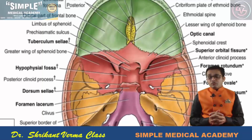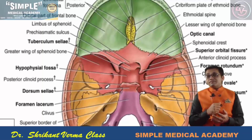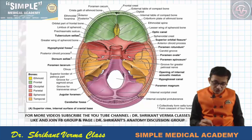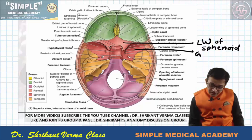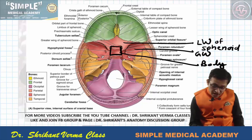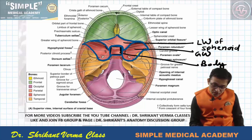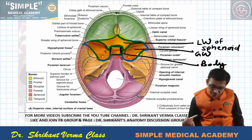These are the various parts of the sphenoid bone. Now we are going to see the important structures passing through the various foramina related to this sphenoid bone. In this image we can see the lesser wing of sphenoid, the greater wing, and the central body. These parts appear just like a bird — the small wing, the large wing, and the central part.